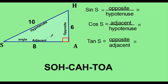If we look at angle S, the sine of angle S is the opposite over the hypotenuse. The opposite is 6 units long and the hypotenuse is 10, so this sine ratio is going to be 6 over 10, simplified down to 3 over 5.